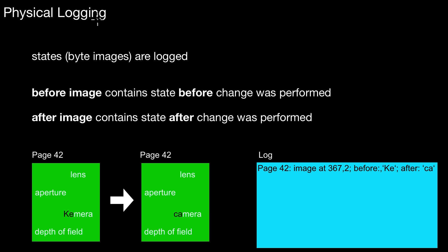So what is physical logging? Here you keep the states, the byte images of your store. You can identify a before image and an after image. Let's start with an example. Let's assume you have a page 42. It has certain entries, certain terms from photography. And you want to change something here. You write out one log record — that is one log record only.